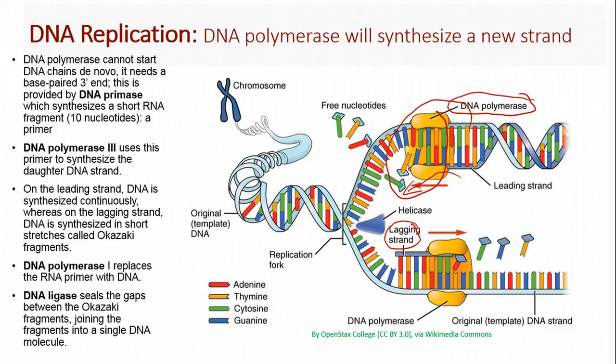So after DNA polymerase 3 has done its thing, we have another molecule called DNA polymerase 1. That comes in and replaces that short 10-nucleotide primer we talked about with DNA. And then we have a molecule called DNA ligase that seals the gaps between our discontinuously synthesized lagging strand fragments. These are called Okazaki fragments. And that joins those Okazaki fragments into one unbroken DNA strand.